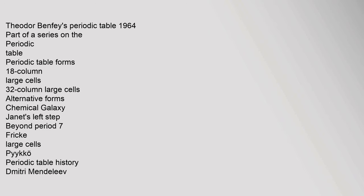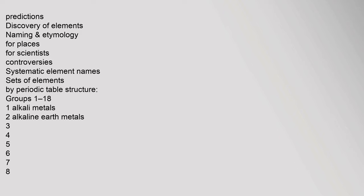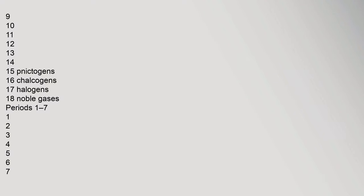Theodore Benfey's Periodic Table, 1964. Part of a series on the Periodic Table. Periodic Table forms: 18-column large cells, 32-column large cells. Alternative forms include Chemical Galaxy, Janet's Left Step, Beyond Period 7, Fricke Large Cells, and Pyiko Periodic Table. History covers Dmitry Mendeleev, predictions, discovery of elements, naming, and groups including Nictogens, Chalcogens, Halogens, and Noble Gases.